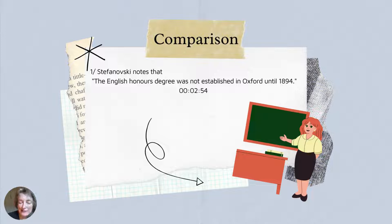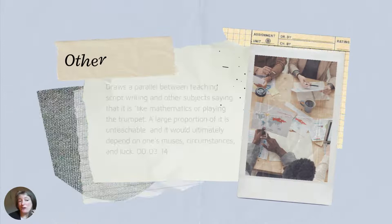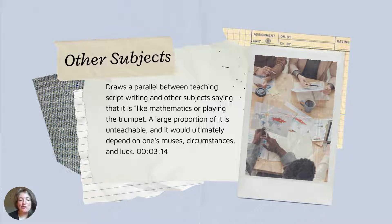First of all, he makes a comparison between what happens in the English art of creative writing and in the other arts, such as music and the visual arts, such as painting. He notes that the English honours degree was not established in Oxford until 1894 — one of the last of the arts; it took a long time to catch up.